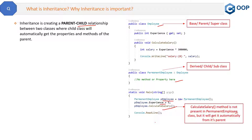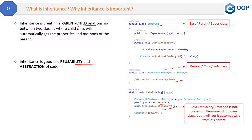Now the next part: why is inheritance an important thing in software? The answer is because inheritance is good for reusability and abstraction of code.